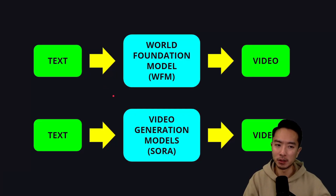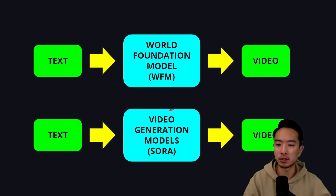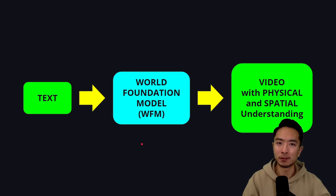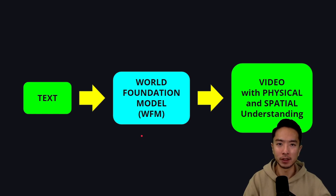You might be wondering: the World Foundation Model takes text to video, and we also have video generation models like Sora, which also takes text to video — so what's the difference? The main difference is the emphasis on physical and spatial understanding, achieved through the specific training data selected to train the model, which gives it a better physical understanding of the world.